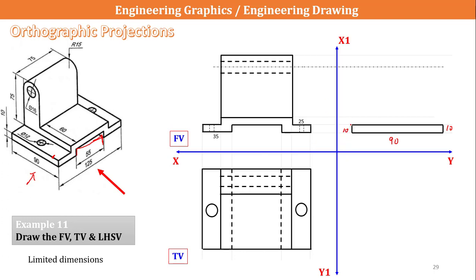From here to here at a distance of 75mm I will try to locate a line. It will not be exactly 75 here, because this reference line is at a distance of 75 and again from here to here it will be at a distance of 15, so 75 minus 15 gives 60. From here at a distance of 60 we have to draw the line.